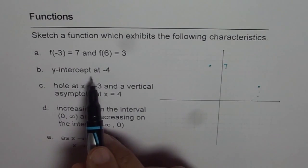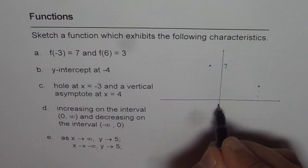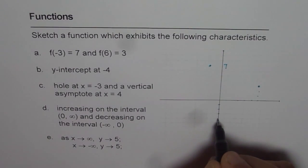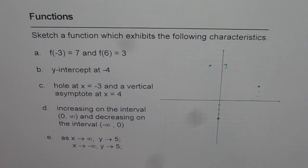And then we have y-intercept of -4. So this is 1, 2, 3, and 4. So this is y-intercept of -4. These are my guide points which are going to help me to sketch the function.